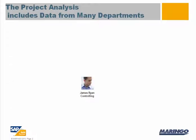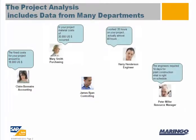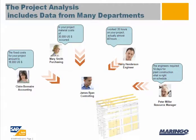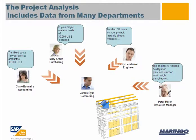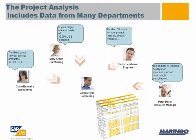The controller gathers information from different departments such as the accounting department, the purchasing department, the specialized department, and the resource planning. The figures are stored in huge Excel tables which are used to determine the costs and revenues based on the working hours. Thereafter, the controller compares the actual and target data.